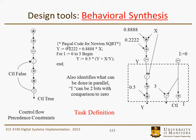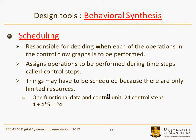Here's an example of the control flow and precedence constraints on a particular chunk of Pascal code written for a square root. Here it's broken into data flow and control tasks — multiplication, addition, and such. It identifies what can be done in parallel. For example, the number i, since it goes up to 3, could be done with 2 bits, along with a comparison to 0. Brute force scheduling decides when the operations in the control flow graphs are to be performed.